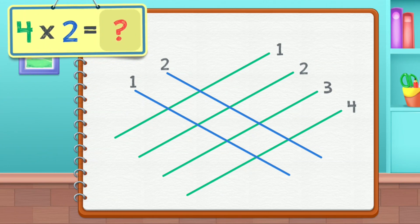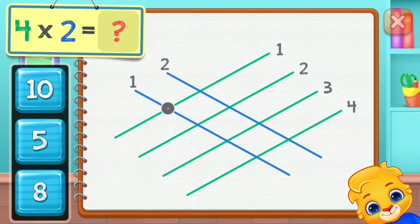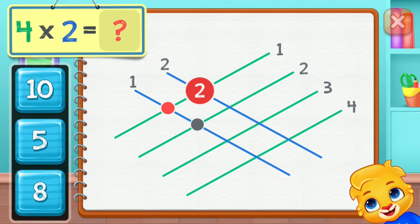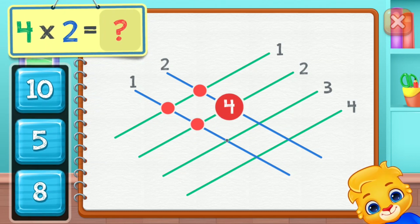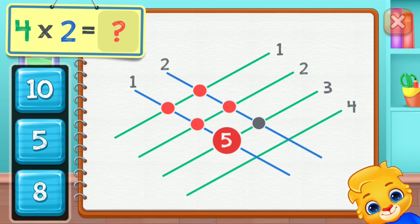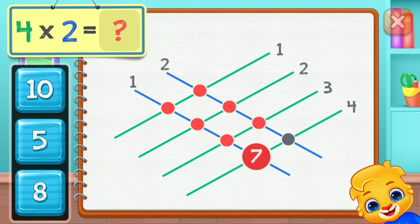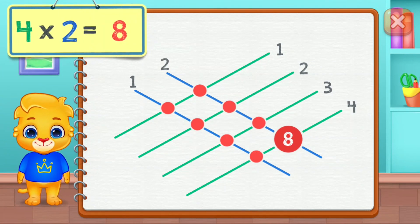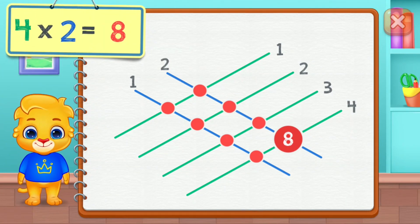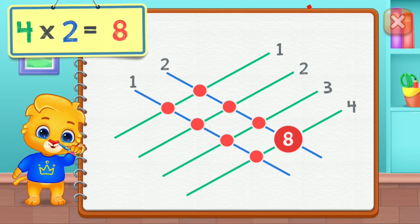Good job! One, two, three, four, five, six, seven, eight. Four times two equals eight.